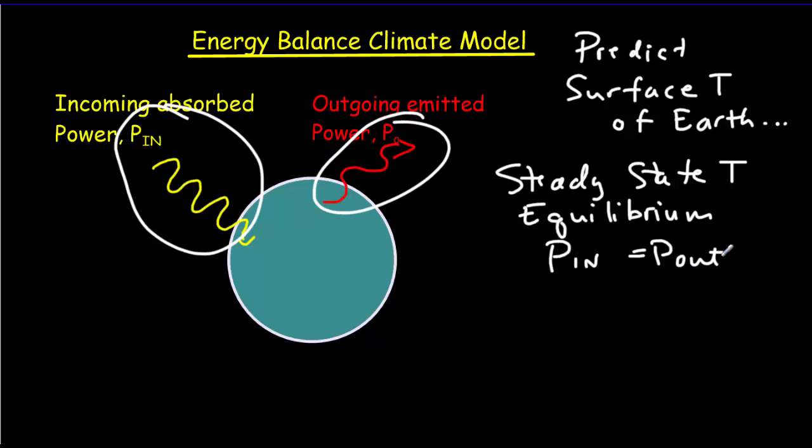If the incoming power is just a little bit bigger, then the temperature is going to rise. If the outgoing power is a little bit bigger, the temperature is going to fall. So we're looking for the temperature at which those two are going to be in balance, in equilibrium.